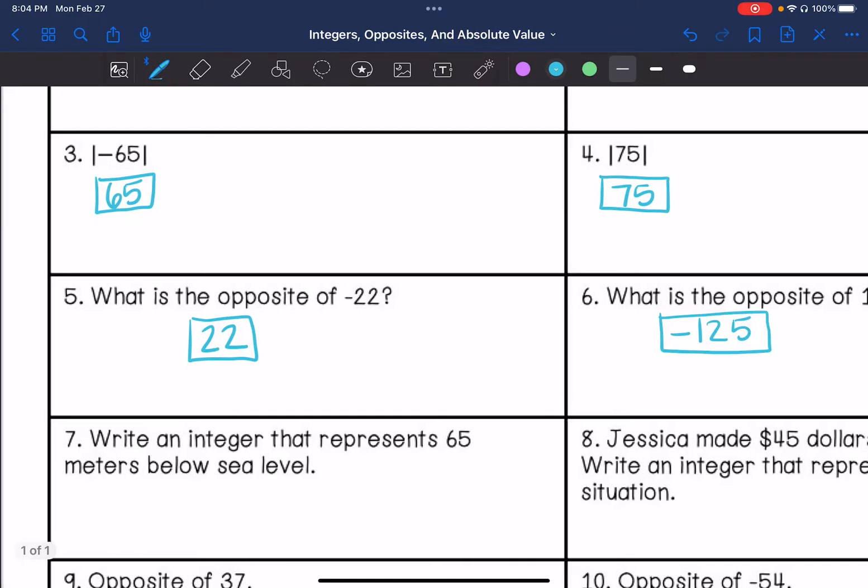Write an integer that represents 65 meters below sea level. So in a real-world problem, we think of sea level as zero. Anything above sea level is positive. Anything below sea level is negative. So 65 meters below sea level is negative 65 meters.